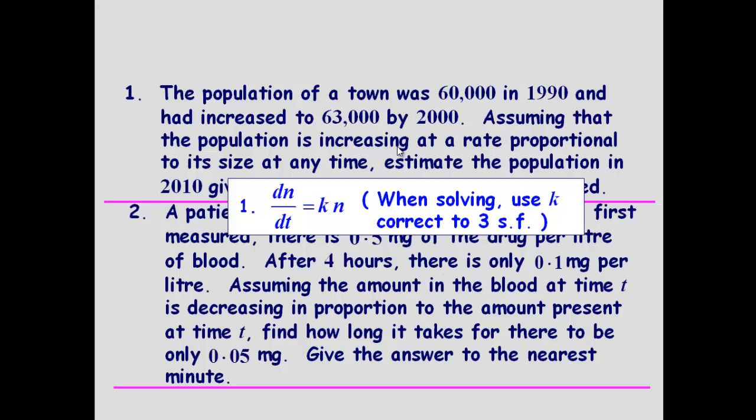It says the population is increasing at a rate proportional to its size. So the change in population with respect to time, dn/dt is equal to kn.